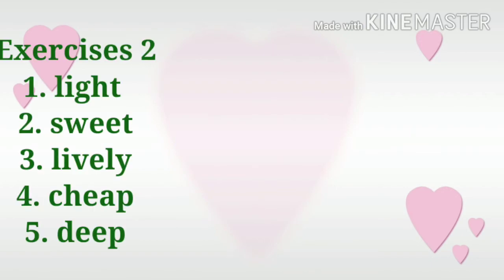Let's now move to exercise number two. Are you ready? You're going to tell me the comparative and superlative degree of the following words. Number one: light. Number two: sweet. Number three: lively. Number four: cheap. Number five: deep. Are you ready to tell me the comparative degree and superlative degree of the following words?